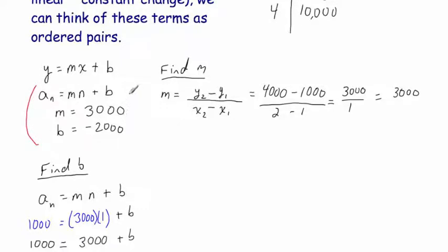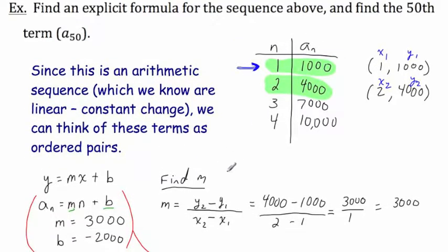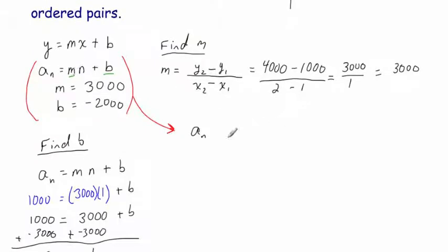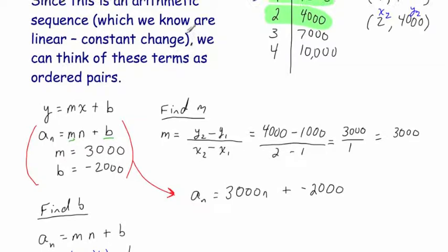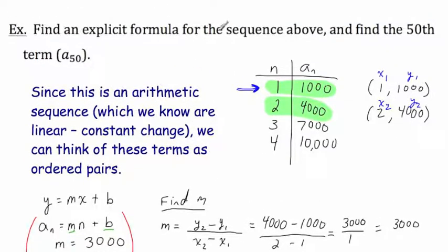We can now write our explicit formula by substituting in m and b. Leaving a sub n and n as the two variables, we substitute m equals 3,000 and b equals negative 2,000. The explicit formula is: a sub n equals 3,000 times n plus negative 2,000. We've found the explicit formula for the sequence.